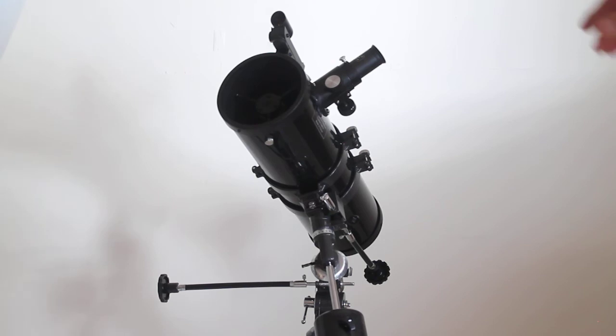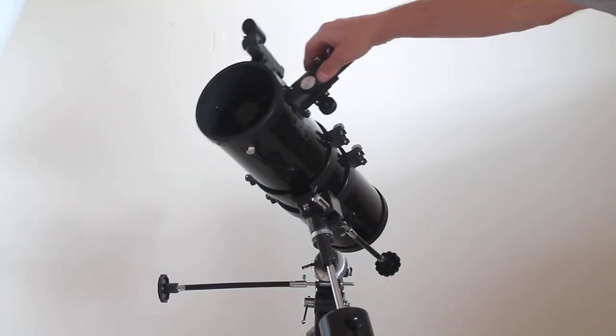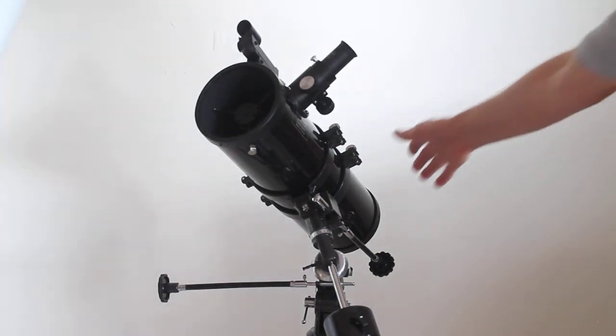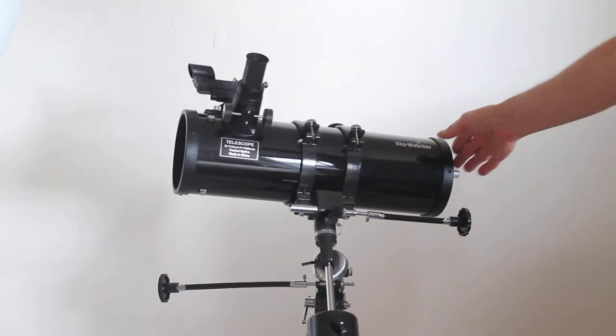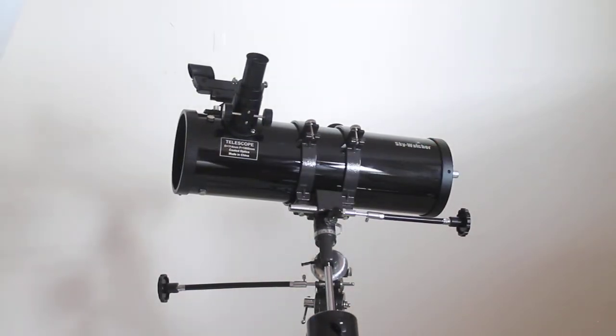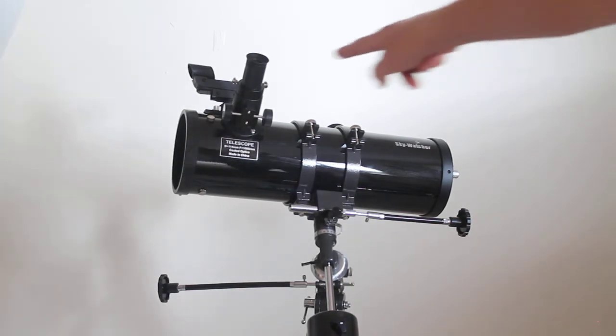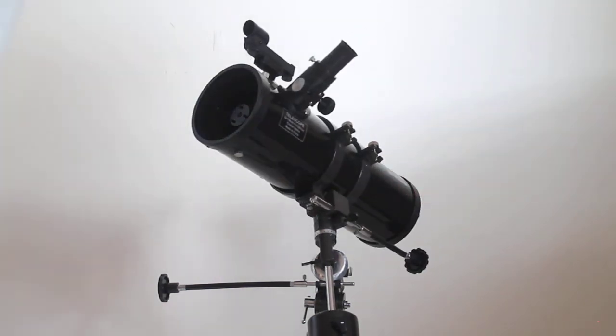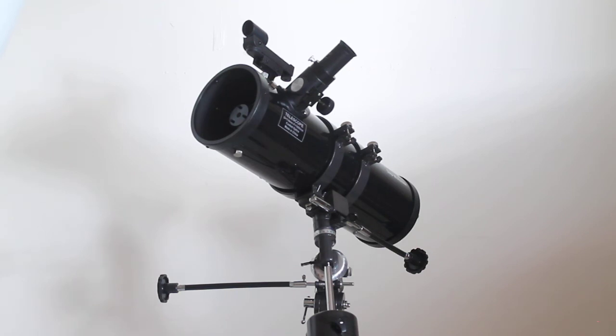Even though it's got a short tube, it's actually 1000 millimeter focal length, even though it's only half a meter long. That's because inside here there is a little lens which doubles the magnification, much like a Barlow lens does, and that makes a 500 millimeter tube into a 1000 millimeter focal length.